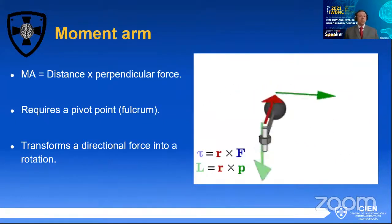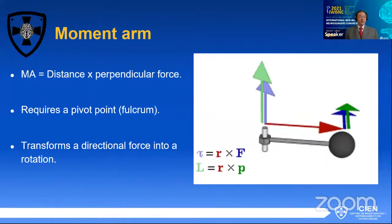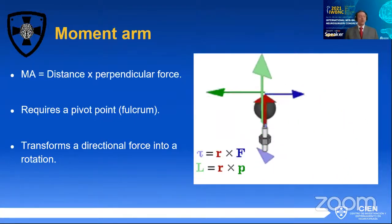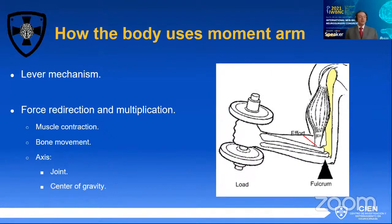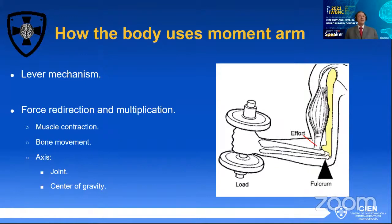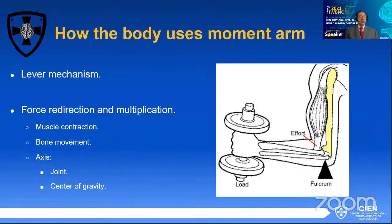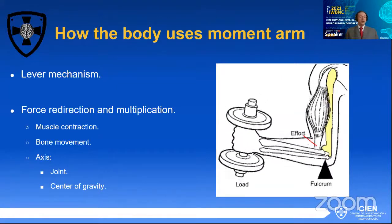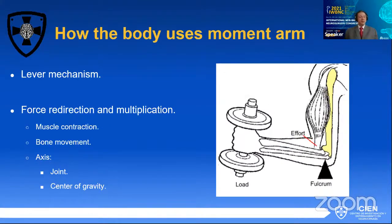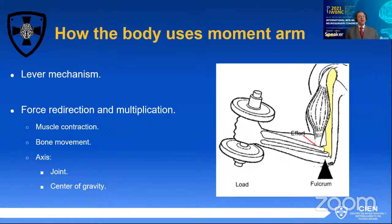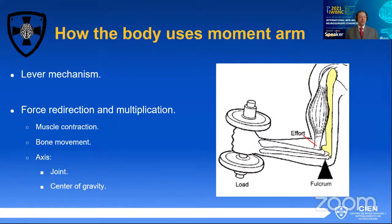Another key concept is moment arm. A moment arm is when you apply forces to a fulcrum, generating rotational movement around that fulcrum, transforming force into rotation. This is the main way our body transforms muscular contractile force into actual movement on a joint. The joints transform loads generated by gravity into a mechanism where the muscle acts to counteract that force — enabling the body to convert muscle contraction into movement and transform forces acquired during movement.